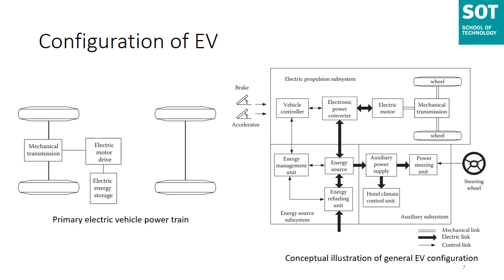The drive train consists of three major subsystems. The first is the electric propulsion subsystem, which comprises the vehicle controller, power electronic converter, electric motor, mechanical transmission, and driving wheels. The energy source subsystem consists of the energy source, energy management unit, and energy refueling unit. The auxiliary subsystem consists of the power steering unit, hotel climate control unit, and auxiliary supply unit.